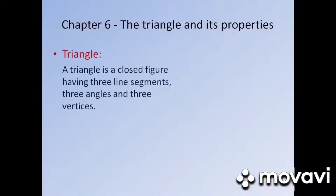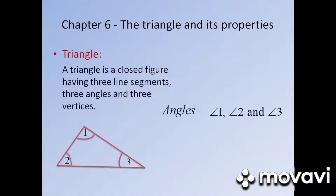A triangle is a closed figure having three line segments, three angles, and three vertices. This is a triangle in which angle 1, angle 2, and angle 3 are the three interior angles of a triangle.